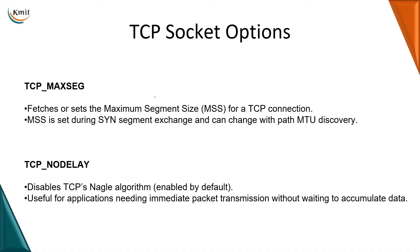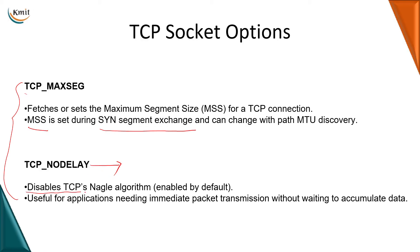Now let us look at the TCP socket options. There are two very important TCP socket options: TCP maximum segment size option, which fetches or sets the maximum segment size for a TCP connection. This maximum segment size is set during the synchronized segment exchange while establishing communication between client and server. Then we have the TCP no delay option, which is used to disable TCP's Nagle algorithm, which is enabled by default.